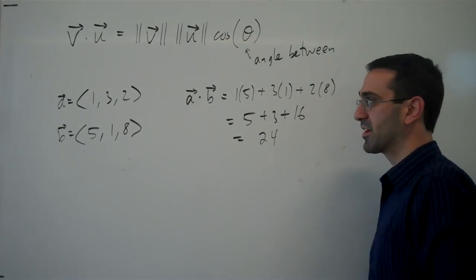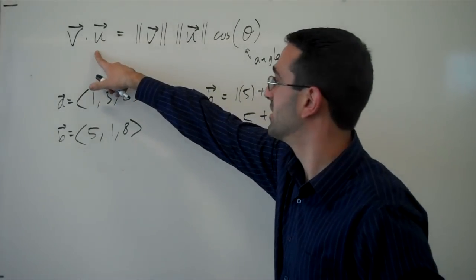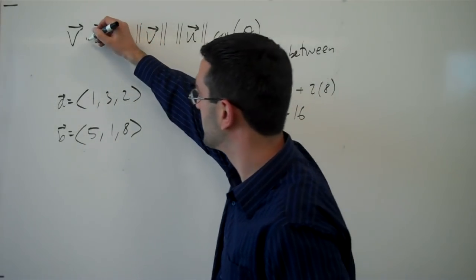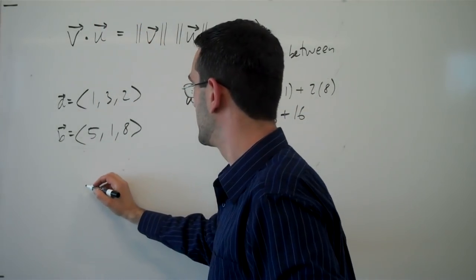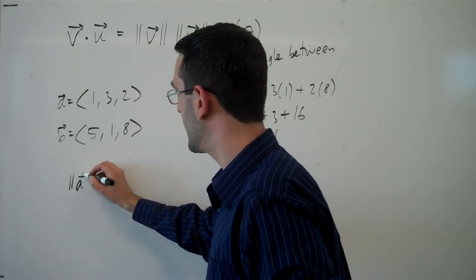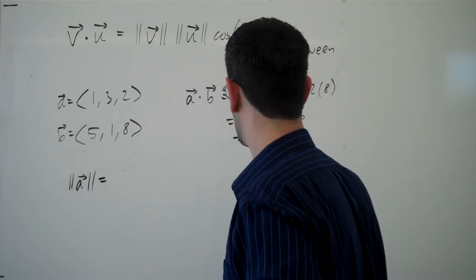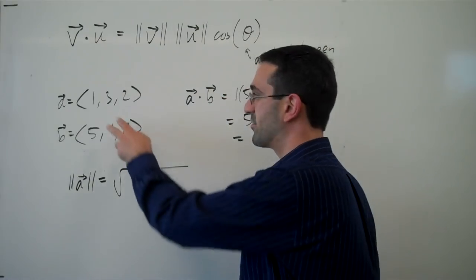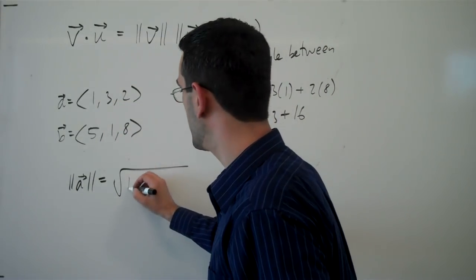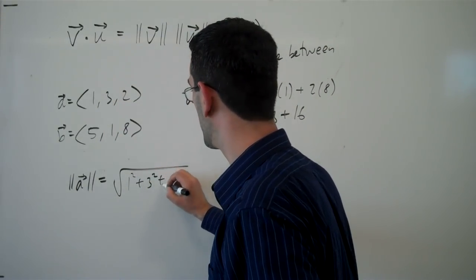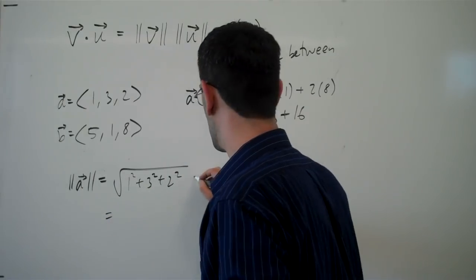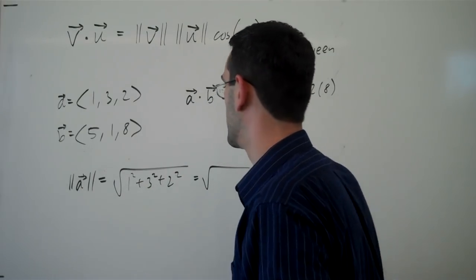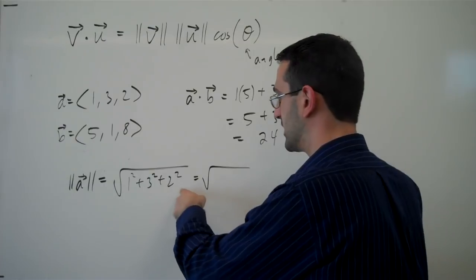So that's the dot product of my vectors. Now I need to know the magnitude of my two vectors. The magnitude of the vector a is the square root of the sum of the squares, so 1 squared plus 3 squared plus 2 squared is square root of 1, 9, 13.